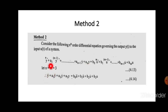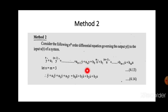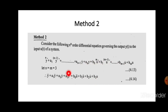When n equals m equals 3, we can write this equation as: y-triple-dot plus a₁y-double-dot plus a₂y-dot plus a₃y equals b₀u-triple-dot plus b₁u-double-dot plus b₂u-dot plus b₃u. That is for the simplicity of analysis.